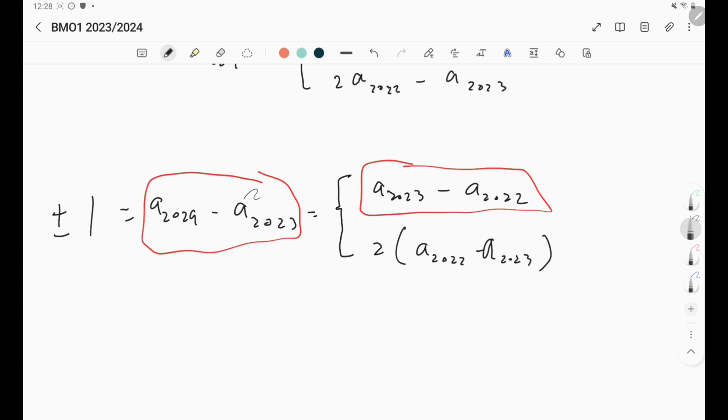Guess what that means? If this is positive or negative one, then a_2023 minus a_2022 is also positive or negative one. So that means if a_2024 and a_2023 are consecutive, then that gives us a_2023 and a_2022 are consecutive as well.